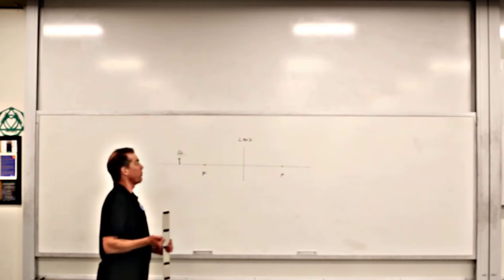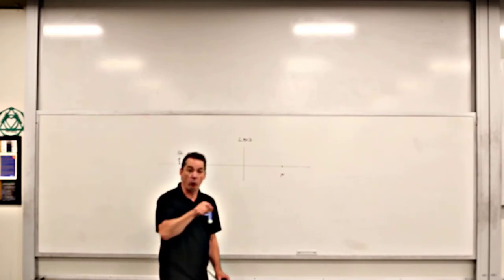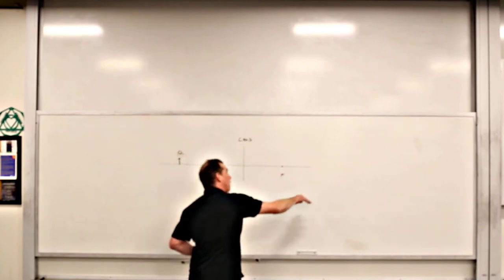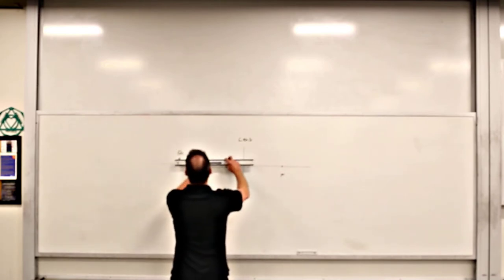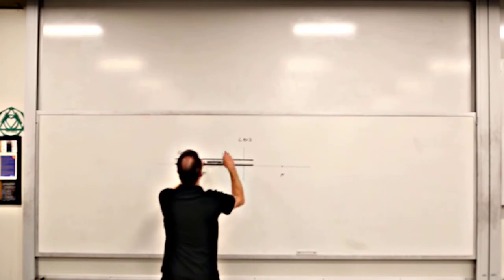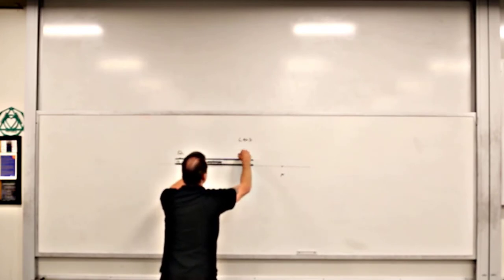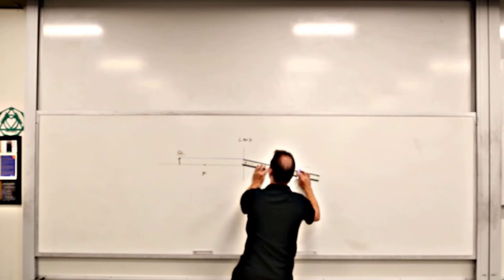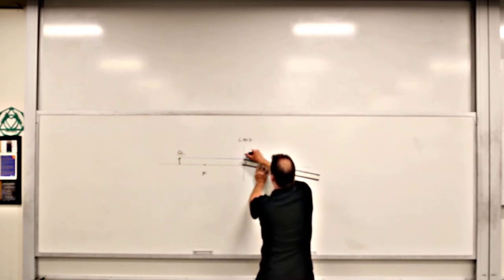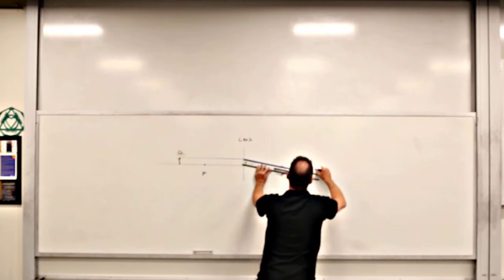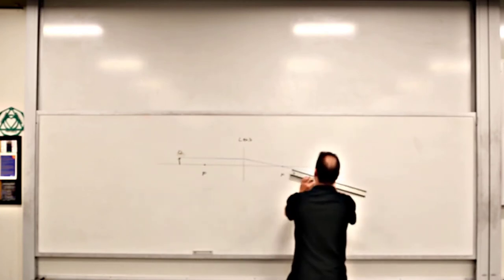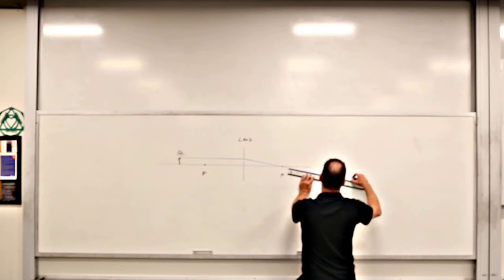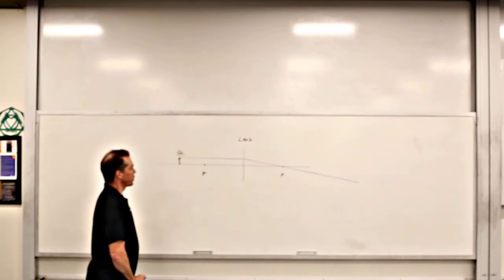First ray travels parallel to the principal axis and refracts such that it is aligned with or goes through a focal point. This being a converging lens means that parallel light rays with respect to the principal axis will converge towards the principal axis. So we've got this first ray coming from the top, traveling parallel to the principal axis, striking the lens, and then carrying on.